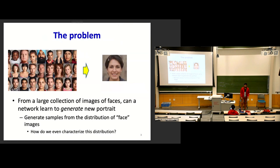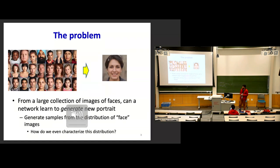So until now, for the past two or three lectures, we have been discussing generative models. You have a data distribution and your model tries to generate new data from that distribution — it tries to learn the distribution and generates data from it.